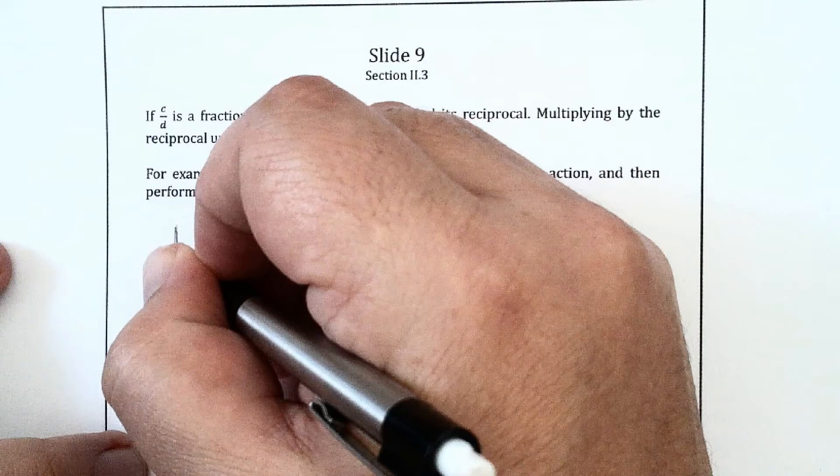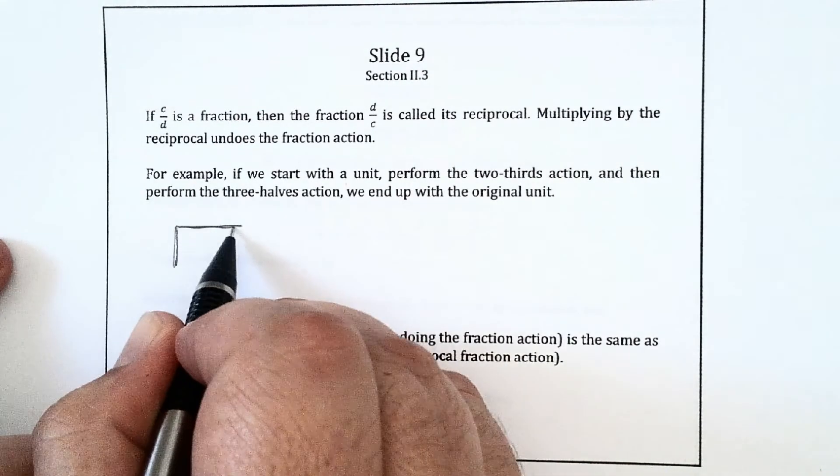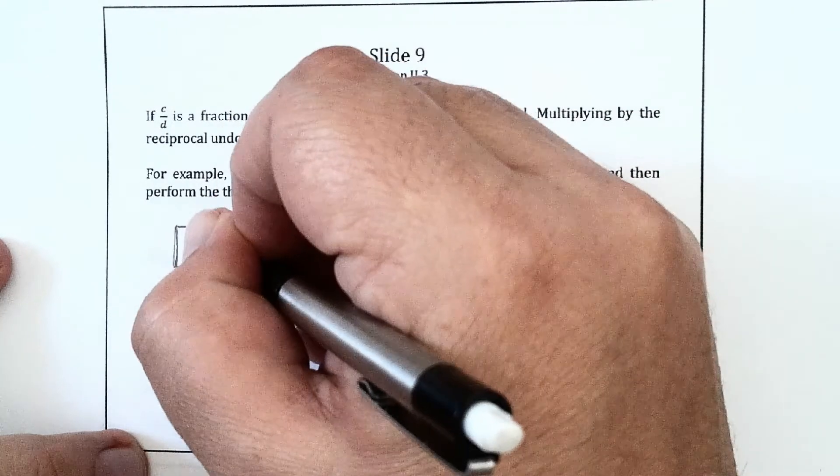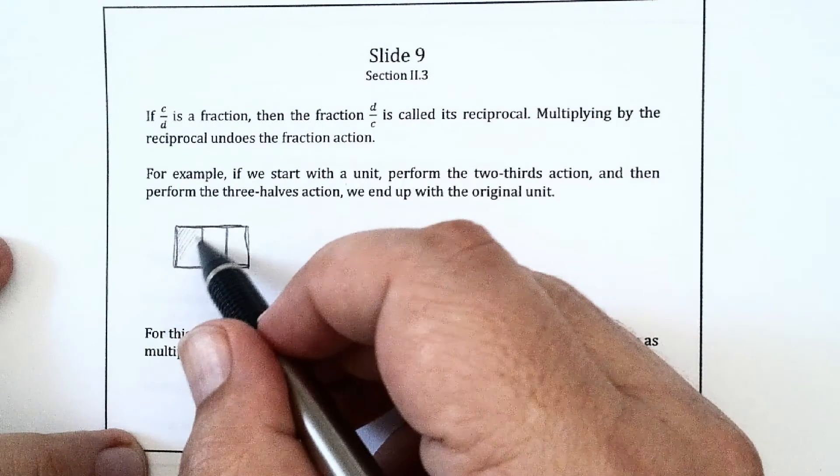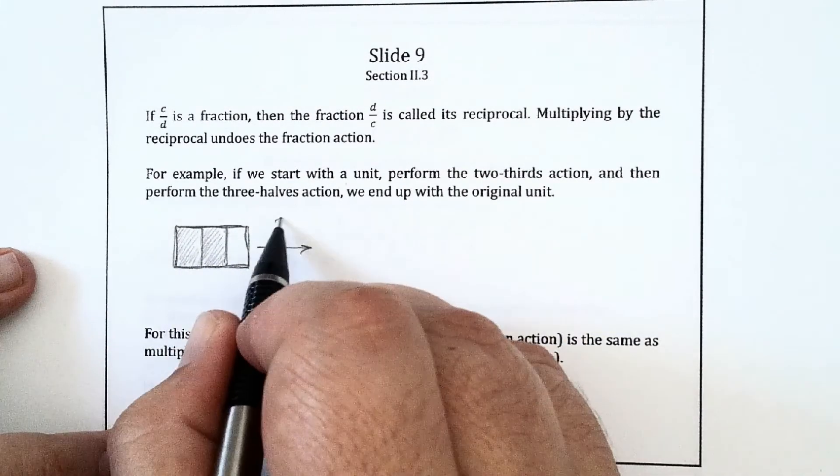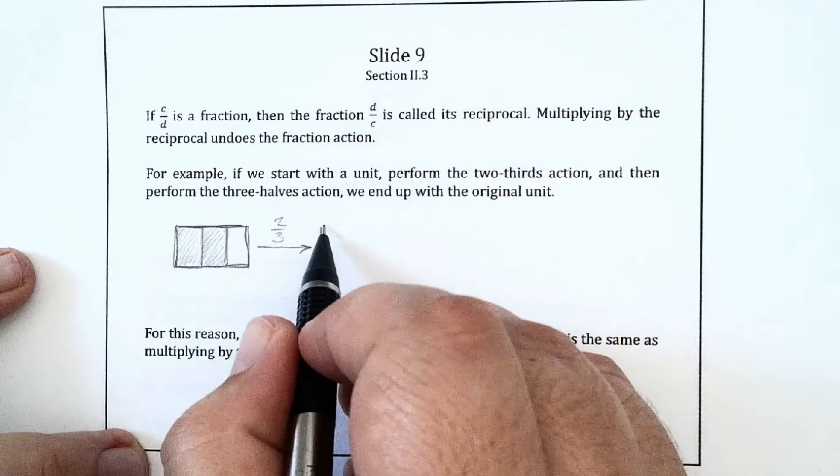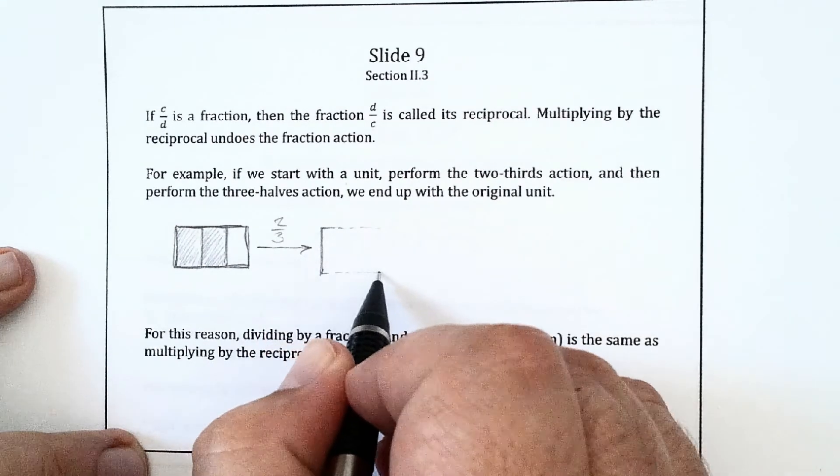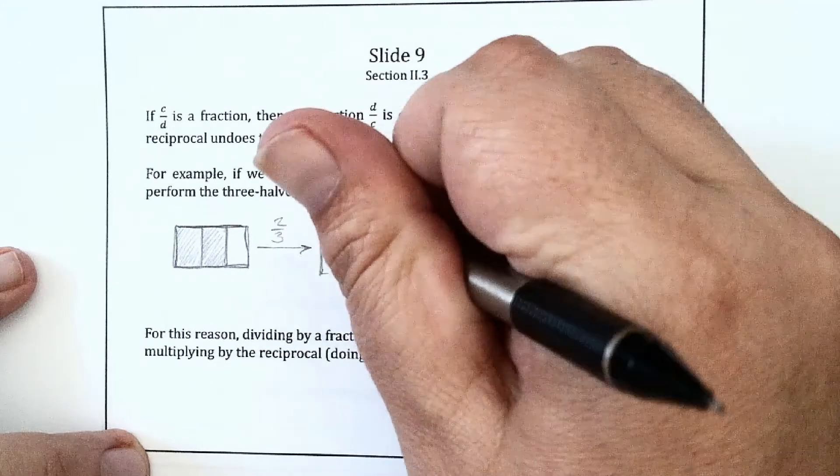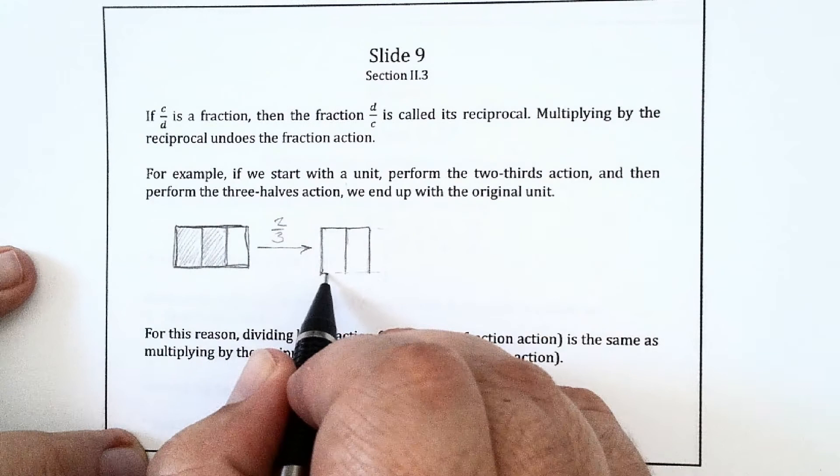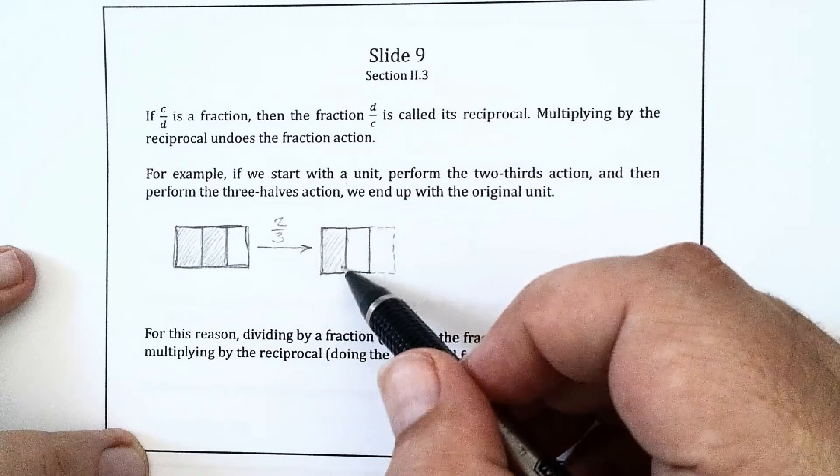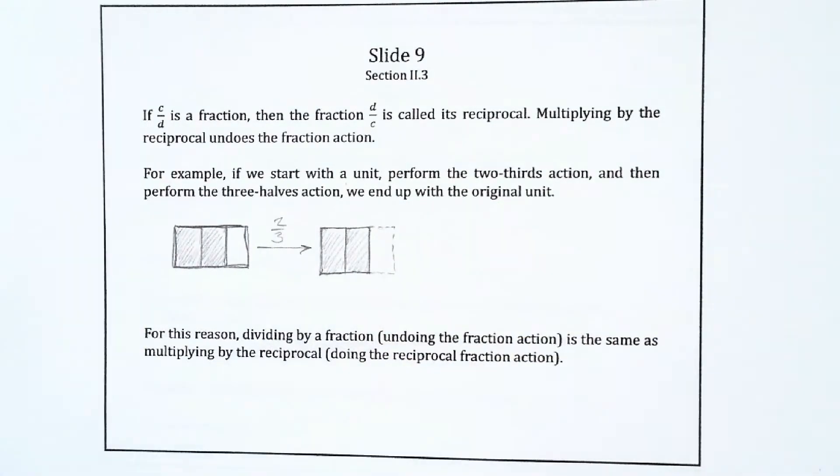So take your unit, let's say it's a little loaf of bread or something. And you perform the two-thirds action, which means you cut this thing into three equal parts, maybe just mentally, maybe physically. You just take two of those parts. So this is the two-thirds action, and you end up with that two-thirds of a loaf.